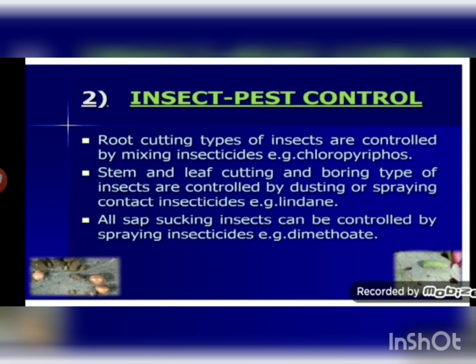Apart from weeds, another threat to crops is insects and pests. Insect pests attack plants in three different ways: by cutting the roots, stems, and leaves; by sucking cell sap from various parts of the plant; or by boring into the stem and fruit. This affects the health of the crop and reduces the yield. Diseases in plants are caused by pathogens such as bacteria, fungi, and viruses. These pathogens can be present in and transmitted through soil, water, and air — similar to how pathogens affect human beings.